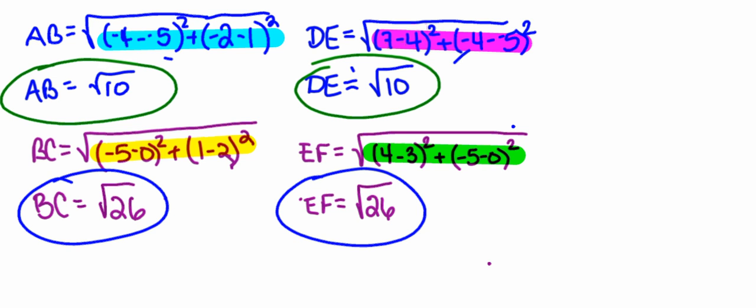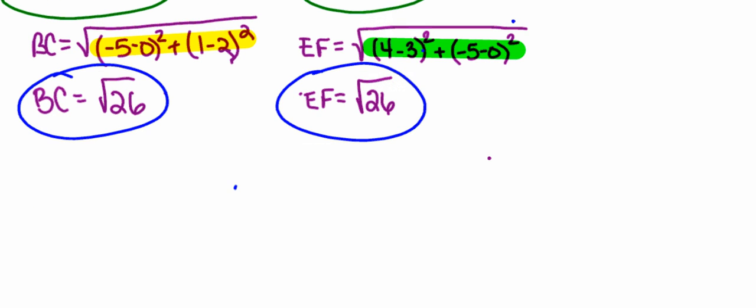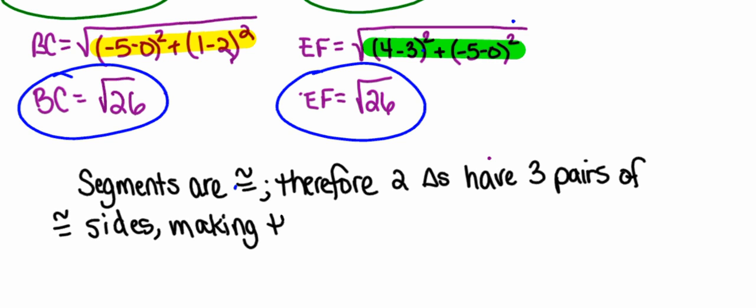So the last thing I have to do is write a little explanation telling exactly why these two triangles are congruent. So I'm going to say segments of equal length or equal measure are congruent, and therefore these two triangles have three pairs of congruent sides. And this makes them congruent by side-side-side. Done.